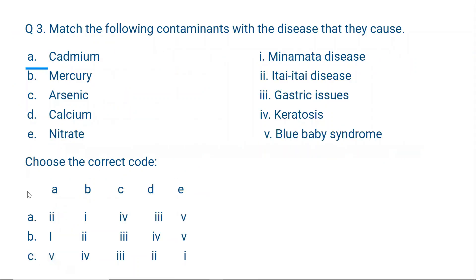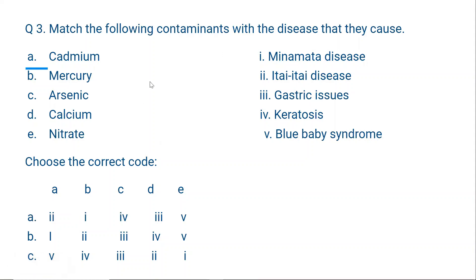Question 3: Match the following contaminants with the diseases they cause. The contaminants are: cadmium, mercury, arsenic, calcium, and nitrate. We know mercury causes Minamata disease, and arsenic causes keratosis. So mercury (B) must be matched with Minamata disease (1), and arsenic (C) must be matched with keratosis (4). Cadmium causes itai-itai disease.